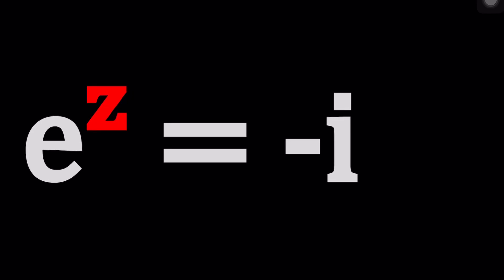Hello everyone. Welcome to A plus BI. This channel is all about complex numbers and in this video we're going to be solving an exponential equation with an imaginary number. Imagine we have negative i on the right hand side. Now we're going to solve for z. Obviously what else can we solve for?